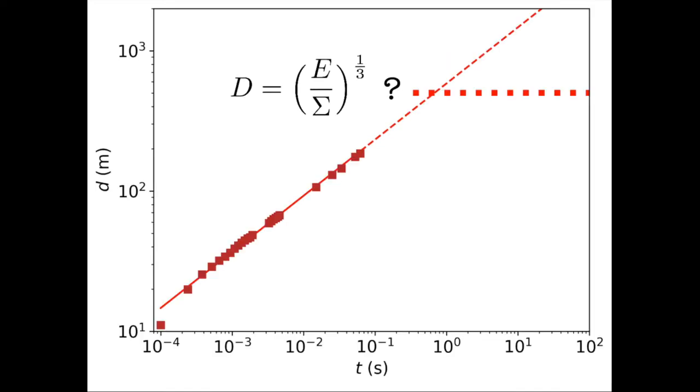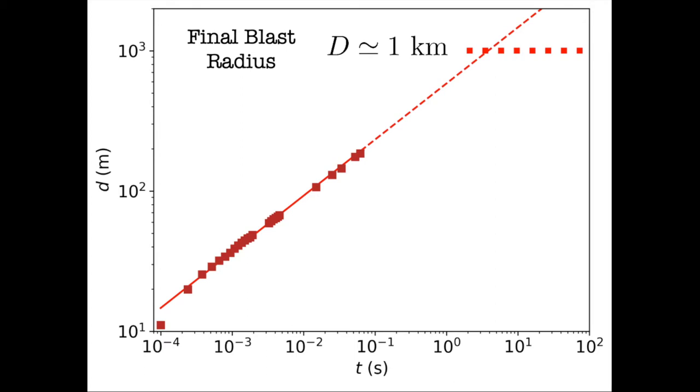Take Trinity. What kind of stress sigma could limit the advancement of the explosion front? What about the atmospheric pressure itself? The air around the explosion must be pushing back. If we assume that the atmospheric pressure gives the relevant stress, then sigma is around 1 atmosphere, that is 10 to the 5 pascals. And the energy for Trinity is around 20 kilotons of TNT, so around 8 times 10 to the 13 joules. Dividing the energy and stress and taking the cubic root, we get a final radius around 1 kilometer. This radius is what we call the final blast radius.